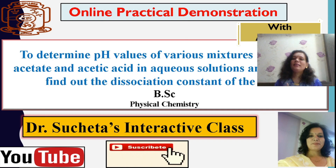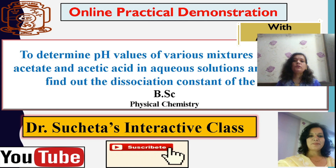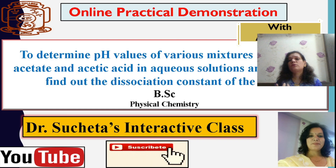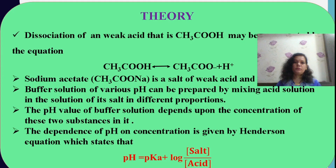Today we will see one of the online practical demonstrations to determine the dissociation constant of acetic acid by using a combination of an acidic buffer, where I will be taking a weak acid and its salt of strong base — that is CH3COOH as the weak acid and CH3COONa as the salt. We will see how it is possible to determine the pH by utilizing a pH meter.